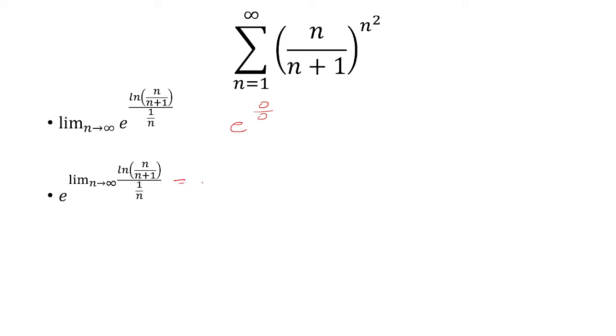And now this will just equal e to the 0 over 0, which is an indeterminate form, which means you have to take the derivative of the top and the derivative of the bottom, using L'Hopital's rule.